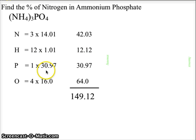The 12 hydrogens times 1.01 gives us 12.12. Phosphorus is 1 times 30.97, and oxygen is 4 times 16, giving us values of 30.97 and 64.0. When we add those four values up, we get a total mass of 149.12 for the ammonium phosphate.